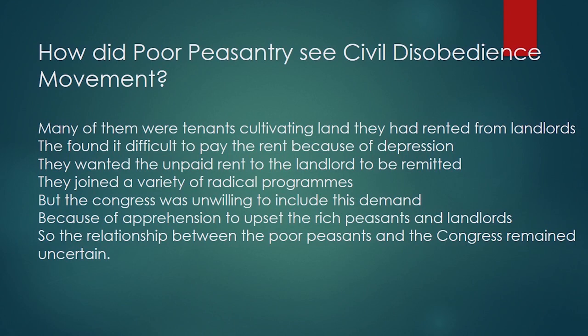How did poor peasantry see the Civil Disobedience Movement? This can be asked as a one-mark, three-mark, or five-mark question. Many of them were tenant cultivators who took land from landlords. It was very difficult to pay rent during the depression, so they wanted the unpaid rent to landlords to be remitted. Because rich peasants were in Congress, the relationship between poor peasants and Congress remained uncertain.